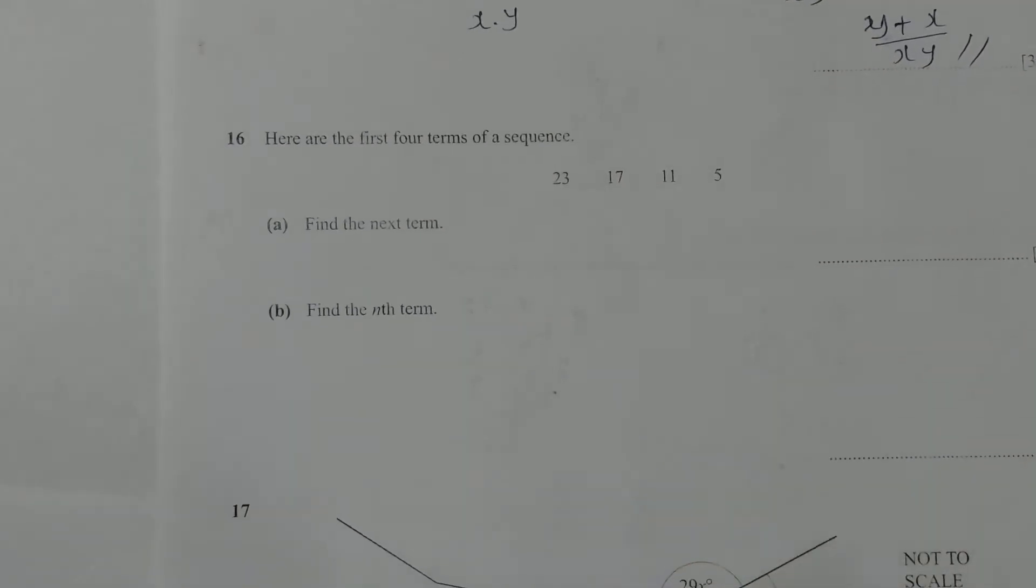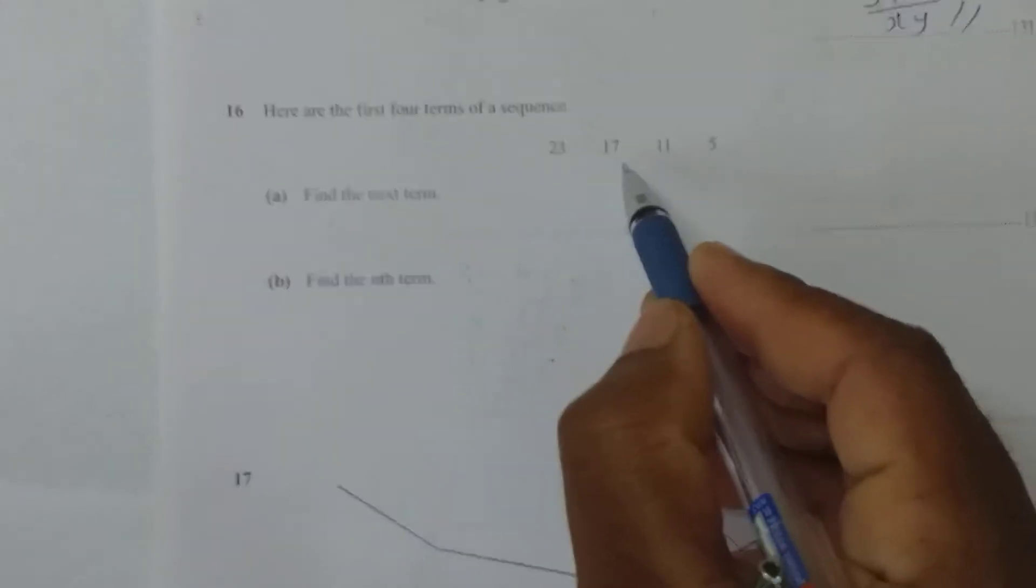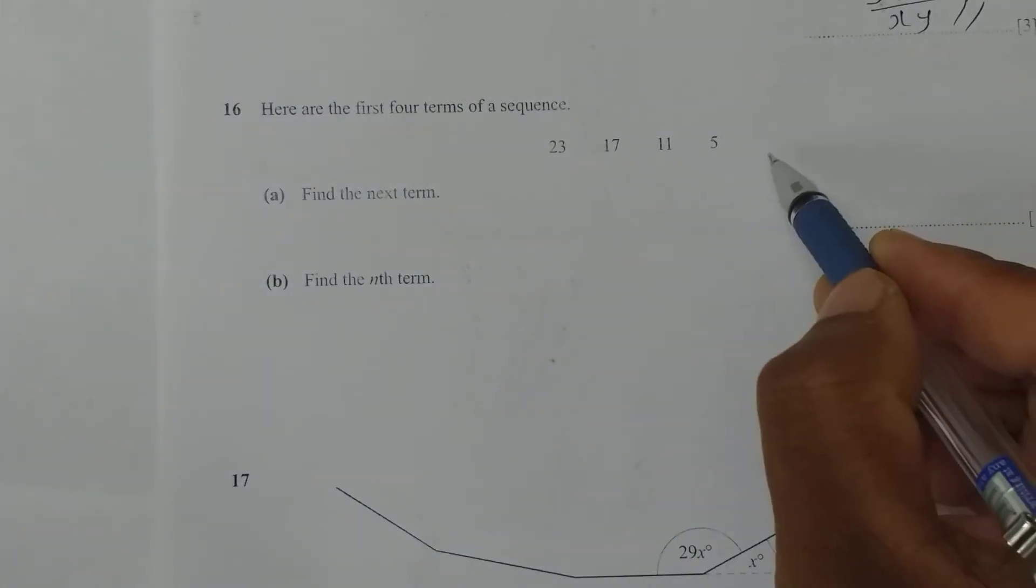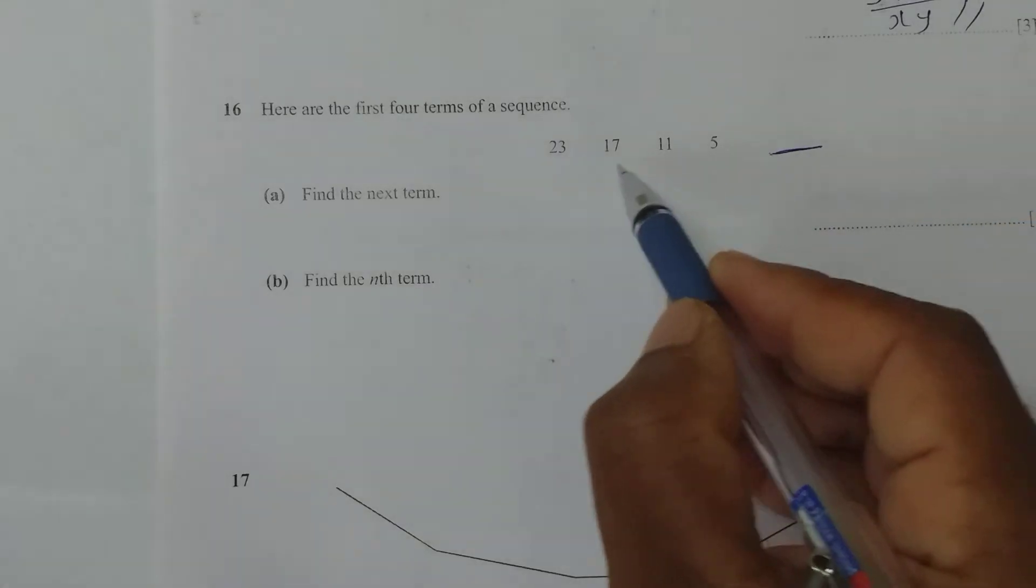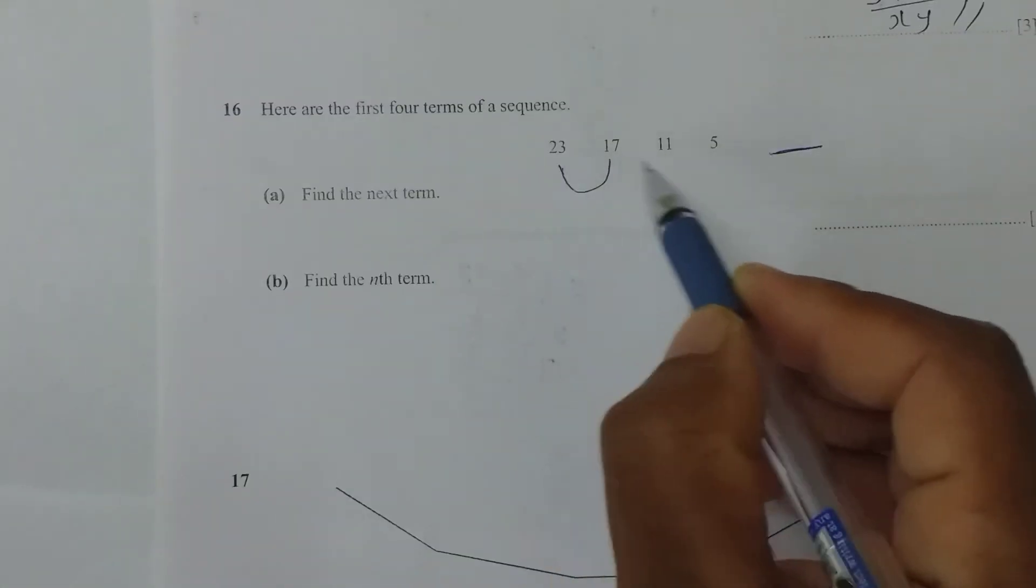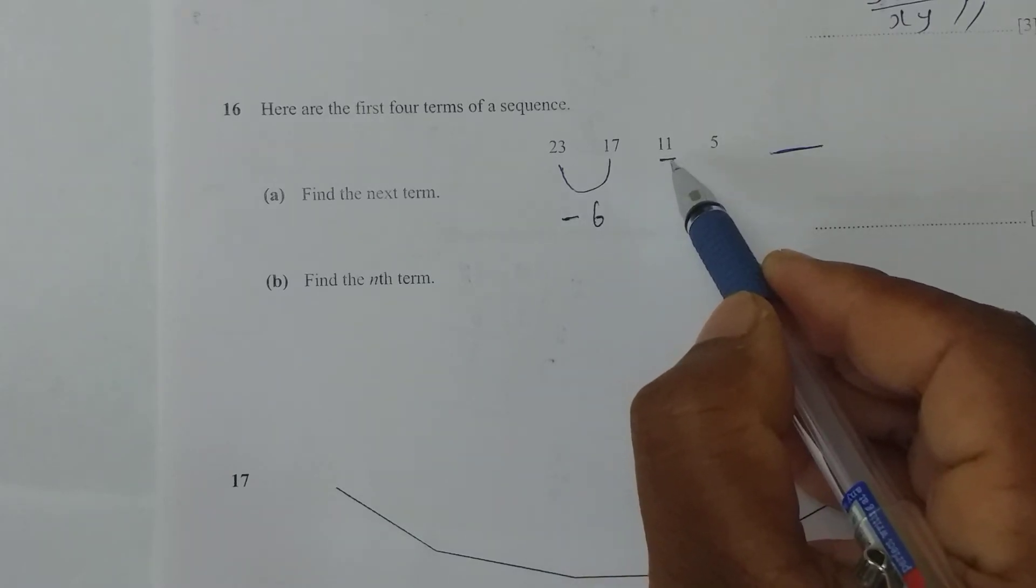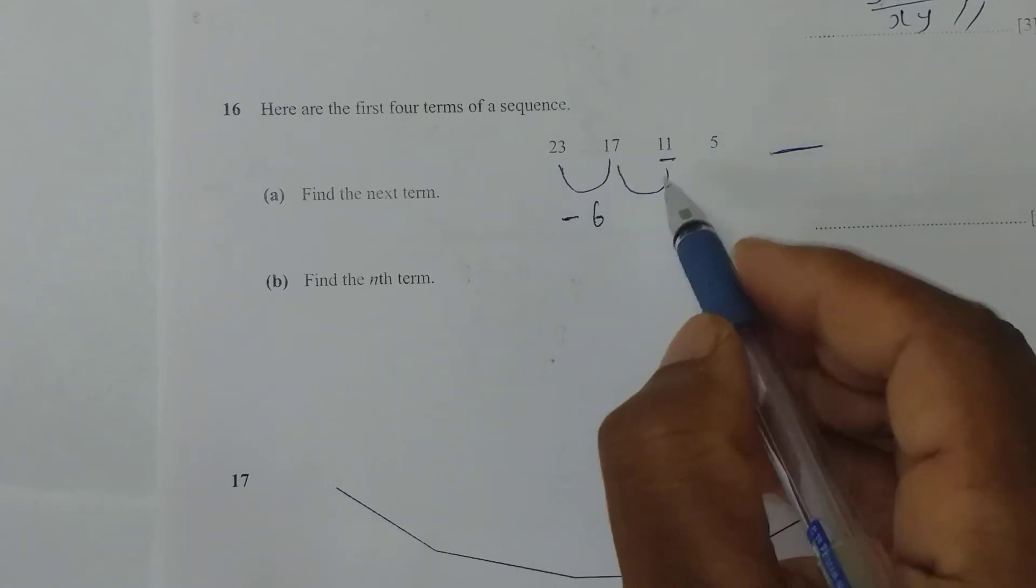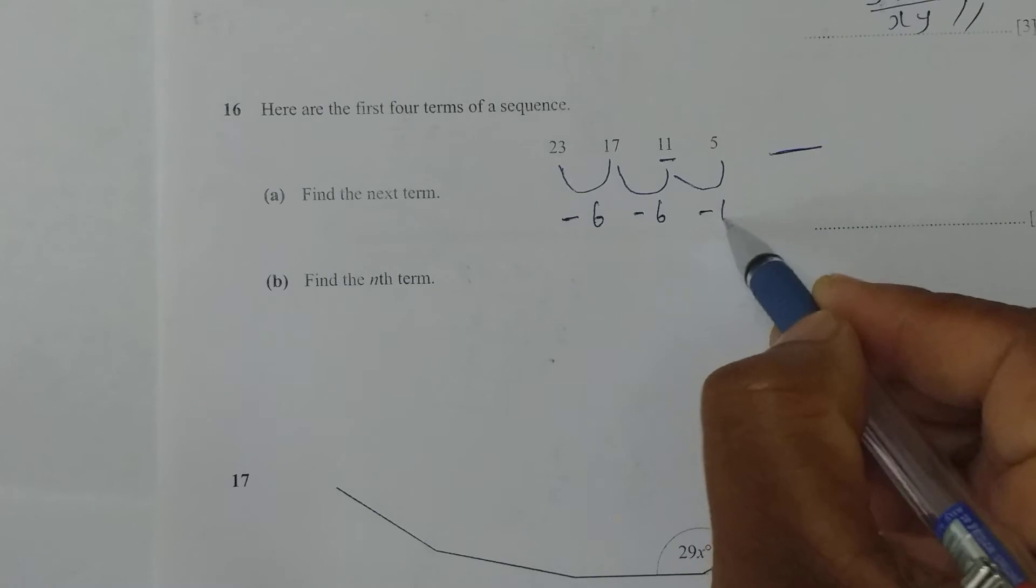Next one. Here are the first four terms of a sequence: 23, 17, 11, 5. Find the next term. 17 minus 23 is minus 6. Always subtract the number from its previous number. 11 minus 17 is minus 6. 5 minus 11 is minus 6.